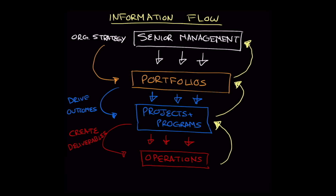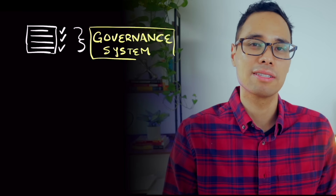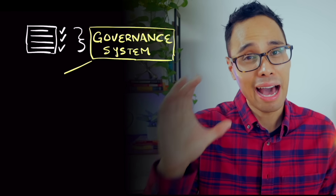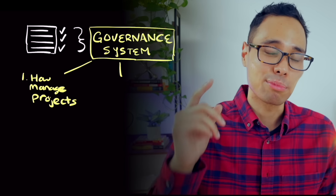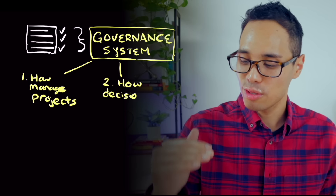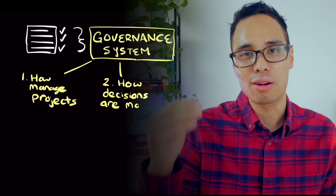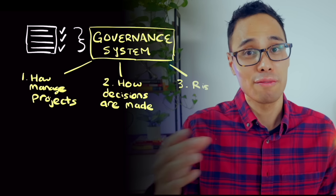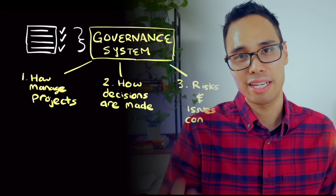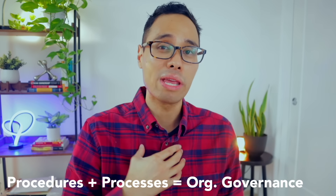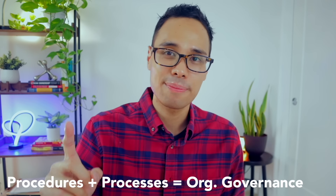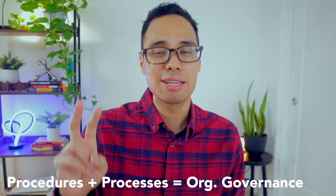Organizations also have their own governance system that establishes how projects are managed, how decisions and changes are made and approved, and how issues and risks are controlled. Think of organizational governance as the organization's procedures and processes that we must follow to make decisions, escalate to leadership, and manage our projects and programs effectively.